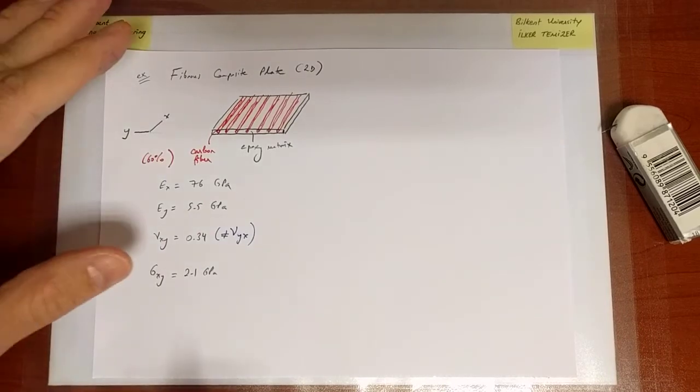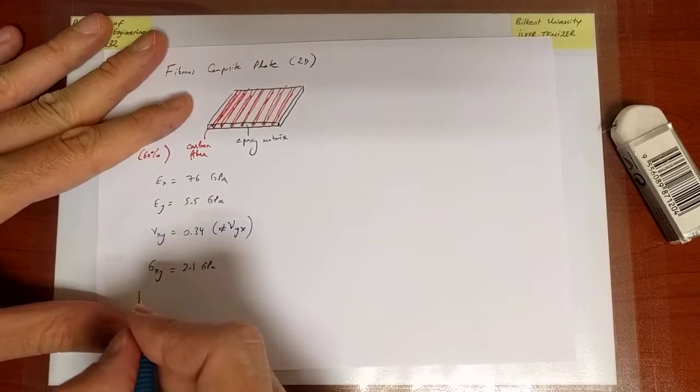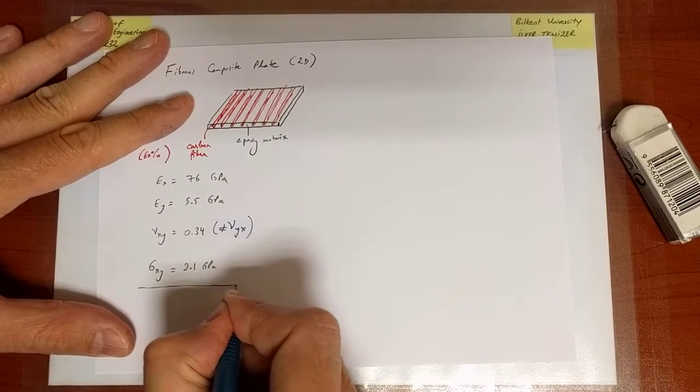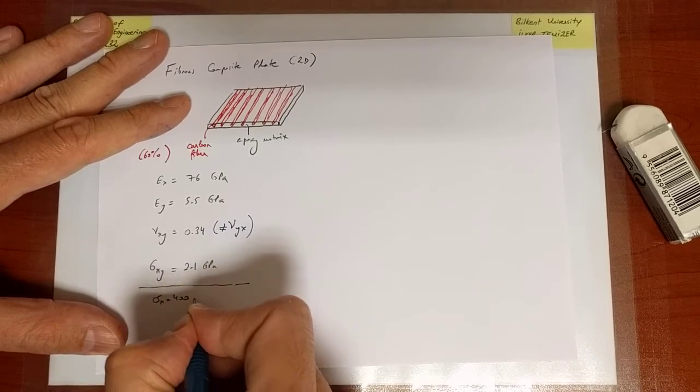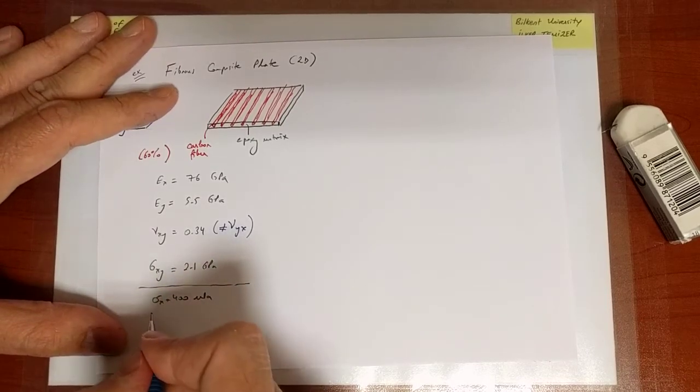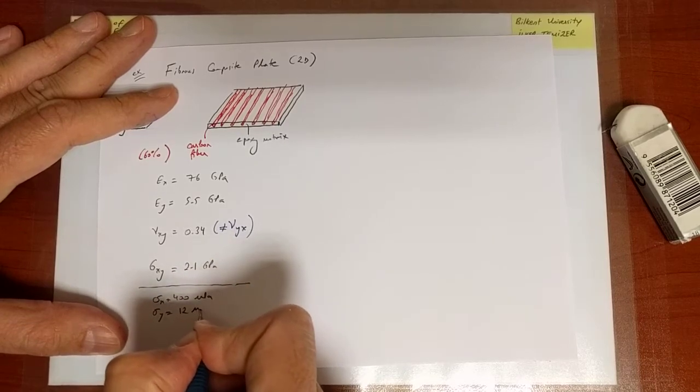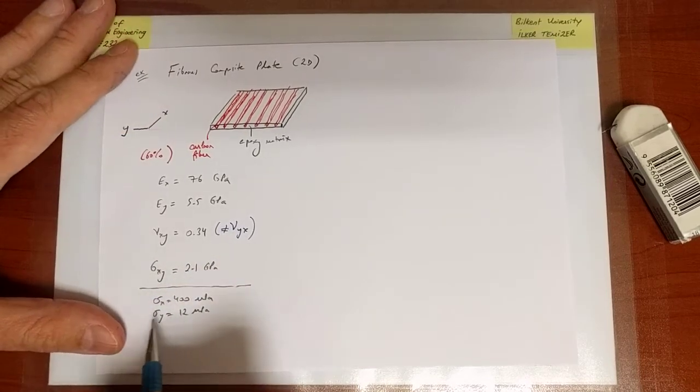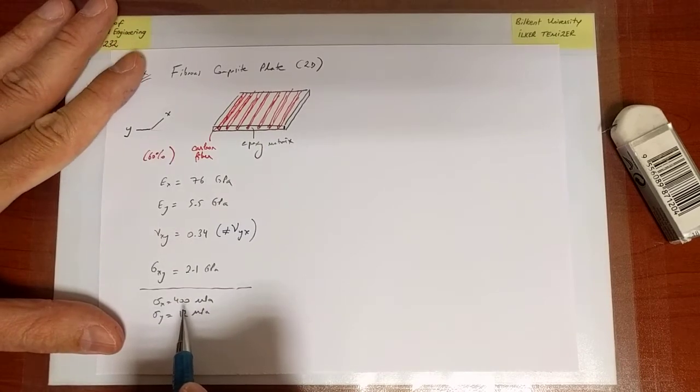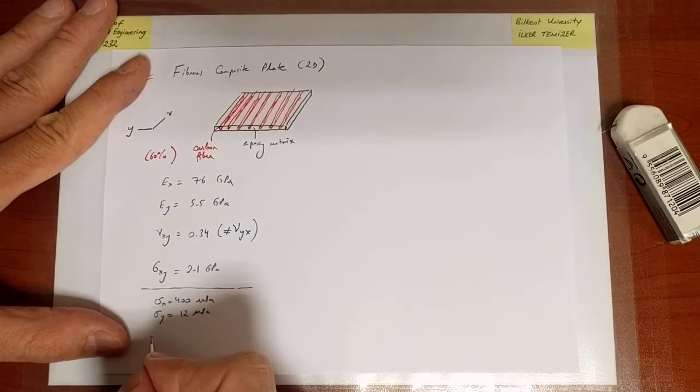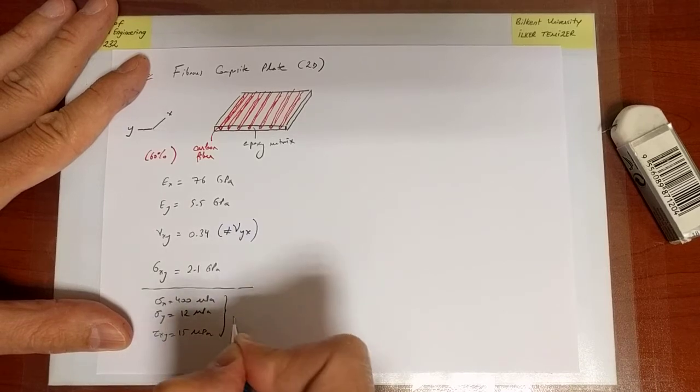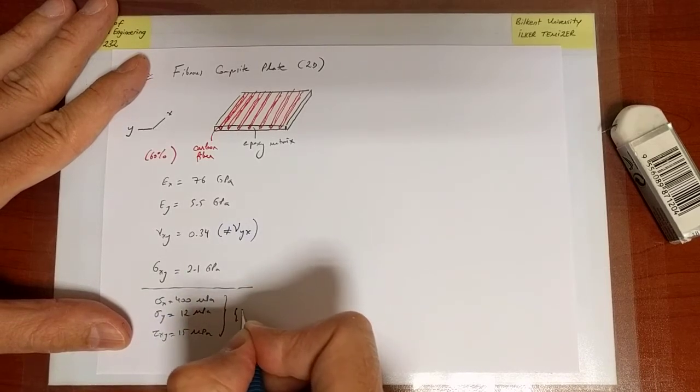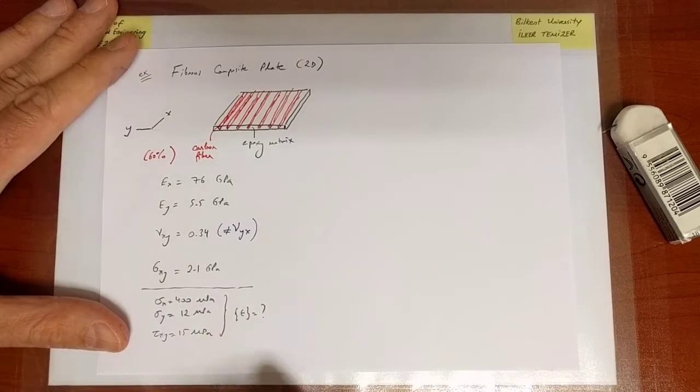Now I'd like to ultimately determine the strains for a given state of stress which is described by sigma_x equals 400 MPa, sigma_y equals 12 MPa. We're imposing a larger stress along the x direction because the material can sustain a higher stress along that direction, and a shear stress tau_xy equals 15 MPa. The question is, find the strain.